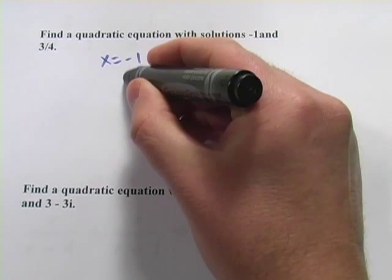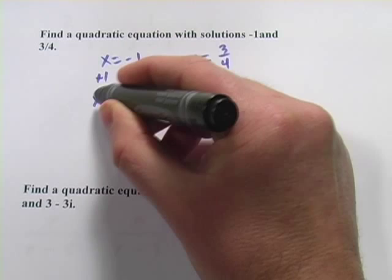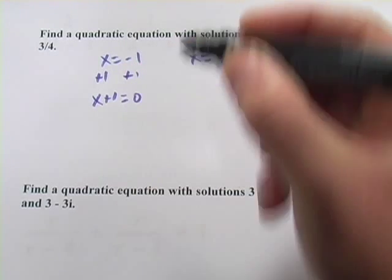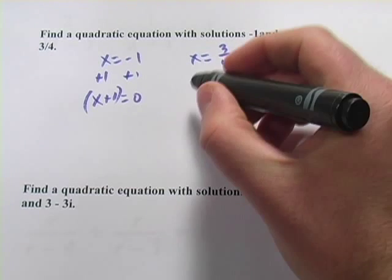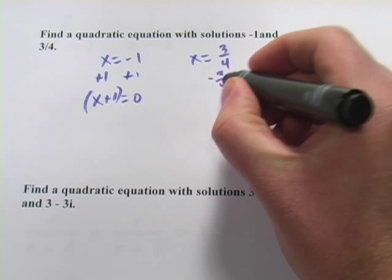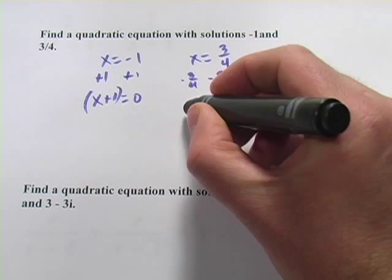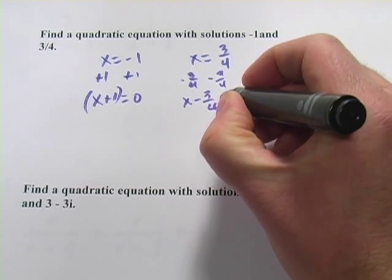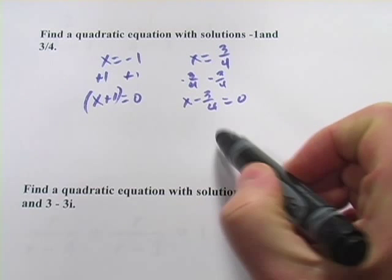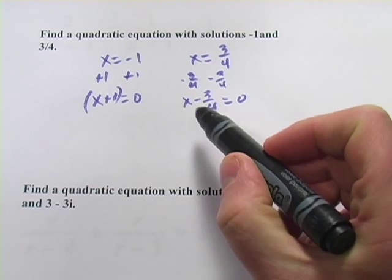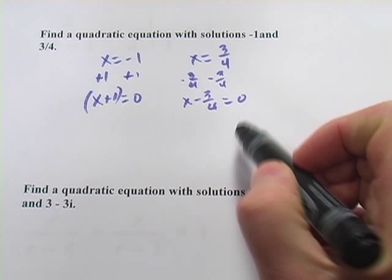So to set this one to 0, I'm going to add 1, and I get x plus 1 equals 0. This is a factor. Over here, we've got, I need to subtract 3 fourths. I've got x minus 3 fourths equals 0. And I could call that a factor, but I don't like dealing with the fractions, and I would recommend that you multiply the fractions away.